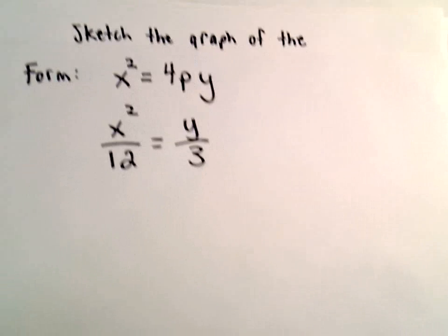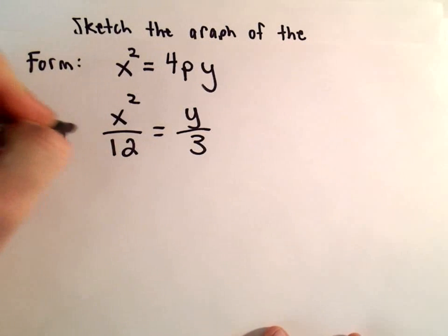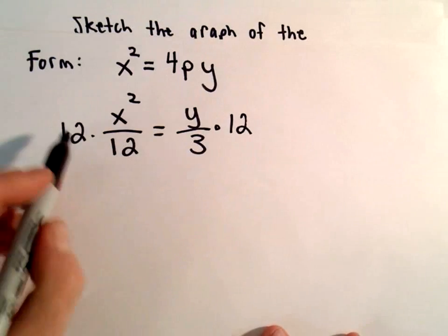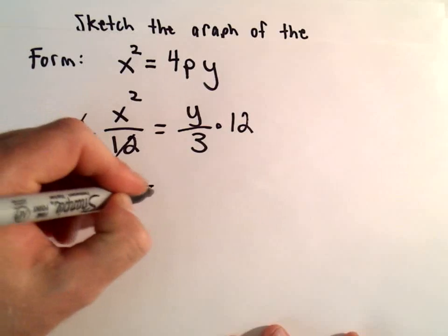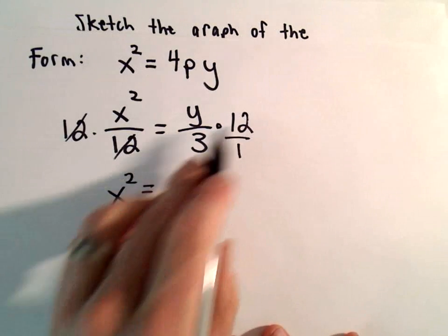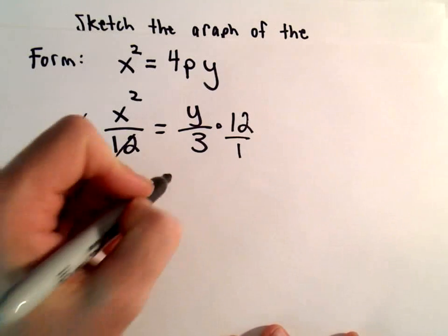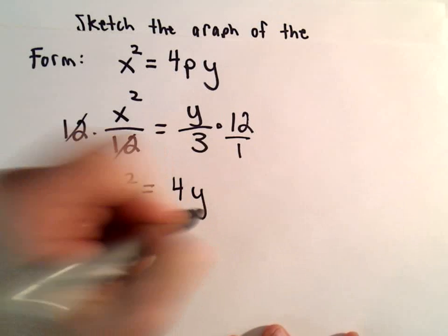To get the x squared by itself, we'll multiply both sides by 12. On the left side, the 12s will cancel out. We've got x squared. You can think about this as 12 over 3, and that'll leave us with 4 times y.